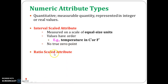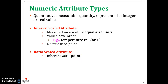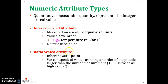To overcome this drawback, we go for ratio-scaled attributes. A ratio-scaled attribute is a numerical attribute with an inherent zero point. If the measurement is ratio scaled, we can speak of a value as being a multiple of another value.